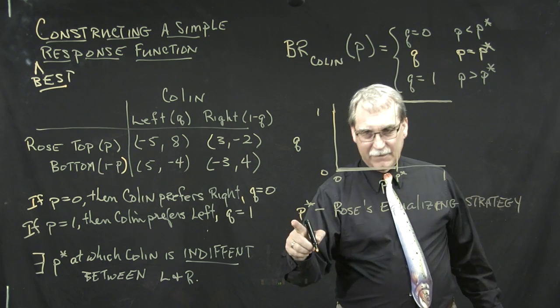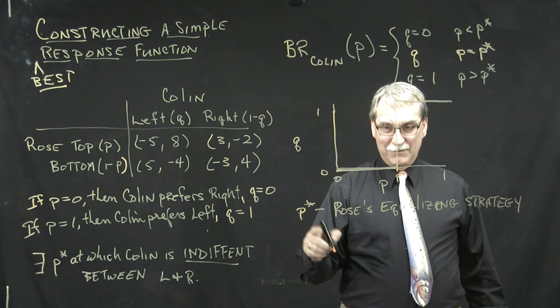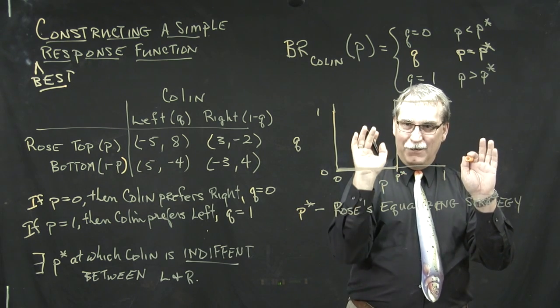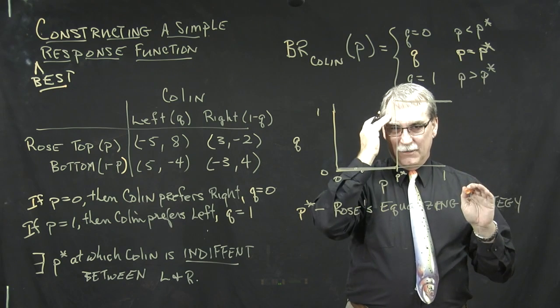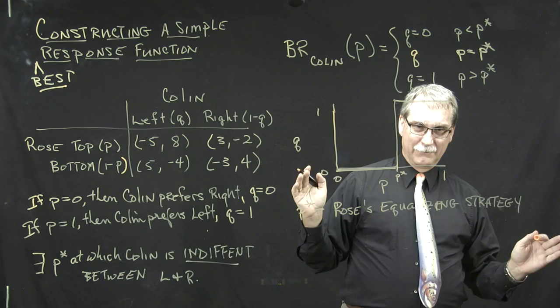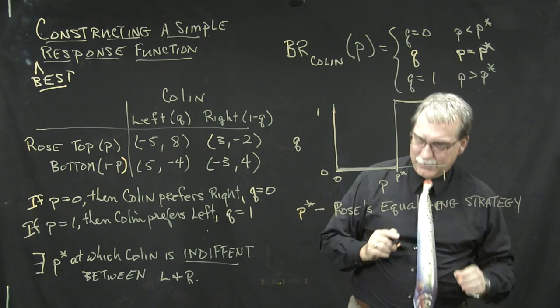Notice I emphasize Rose, because this is what Rose is doing in order that Colin has the same payoff on left and right. So we're using Rose to control Colin's behavior. That's the thing we've got to remember here.